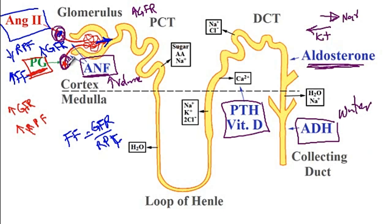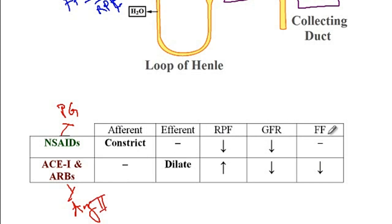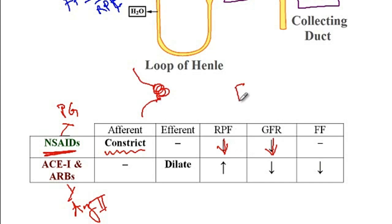Given that prostaglandin causes dilation and angiotensin causes constriction of the afferent arteriole, NSAIDs like ibuprofen inhibit prostaglandin, while ACE inhibitors like lisinopril and angiotensin receptor blockers like losartan inhibit angiotensin 2. NSAIDs block prostaglandins, so there is no dilation — in fact there is constriction of the afferent arteriole. This decreases renal plasma flow and glomerular filtration rate equally, so filtration fraction remains normal.